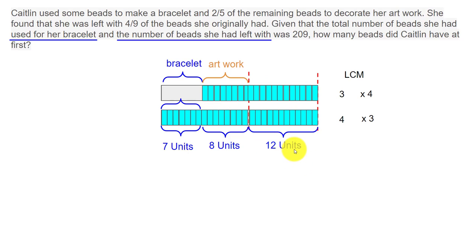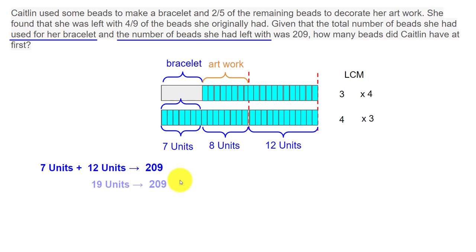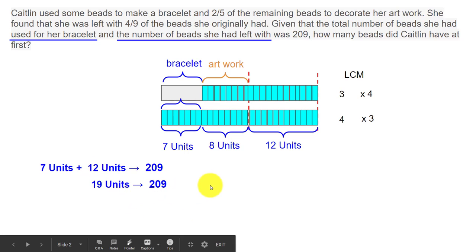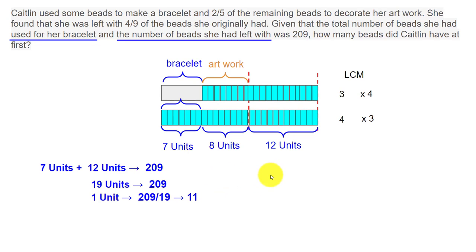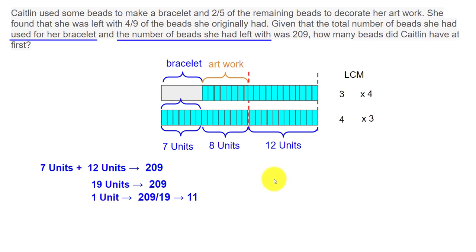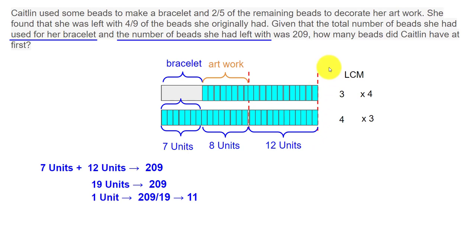The number of beads used for the bracelet is seven units and the number of beads she had left is 12 units. Those two together equal 209, so seven units plus 12 units equals 209. That comes to 19 units equal to 209, and one unit equals 209 divided by 19, which is 11 beads. So one unit here is equivalent to 11 beads.